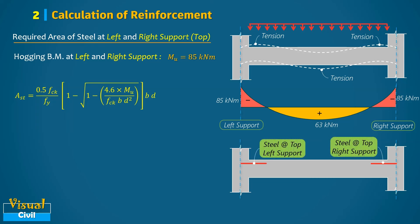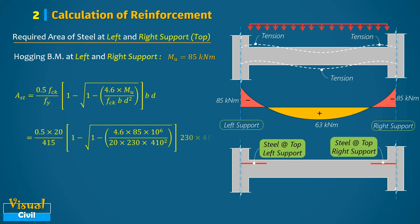By substituting all the necessary values into the equation, we find that the required steel area is equal to 674 mm².